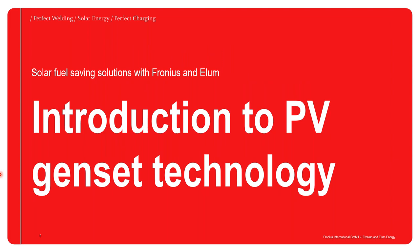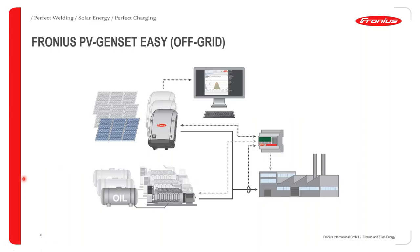The Fronius PV genset easy solution is a completely off-grid system comprising Fronius inverters, a diesel genset, a Fronius PV controller, and the consumer load. The Fronius inverters convert DC from panels into AC which is sent to the load. A CT detects the amount of power the load is drawing and sends this information to the PV controller, which then controls the Fronius PV inverters. More detail on this will follow later in the slides.